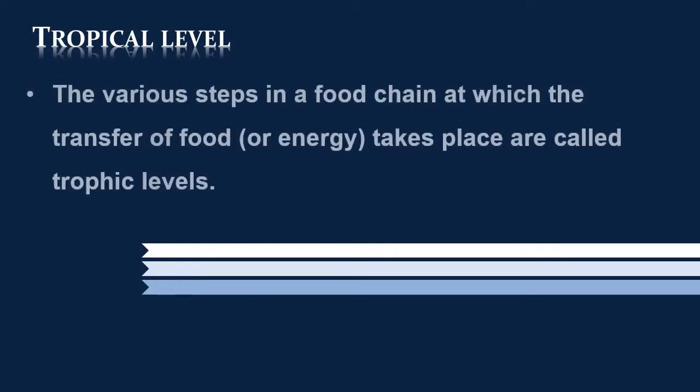Trophic Level: The various steps in a food chain at which the transfer of food or energy takes place are called trophic levels.